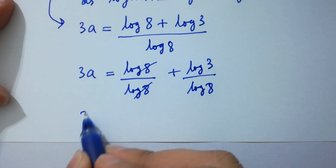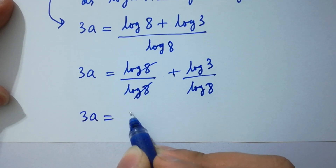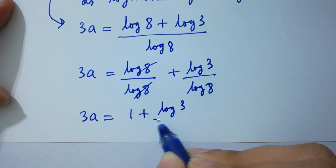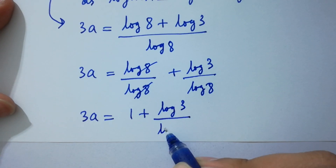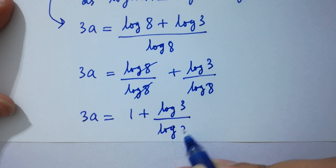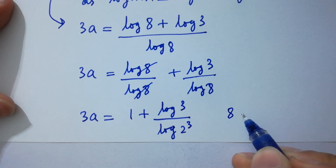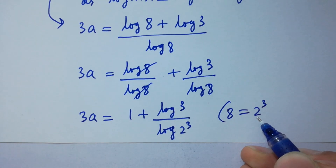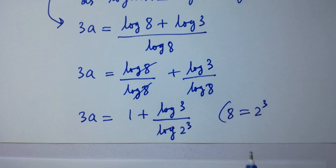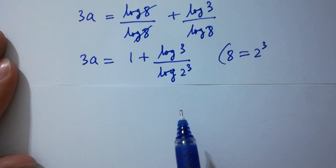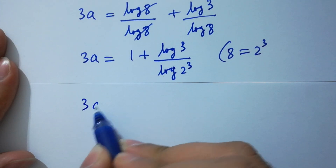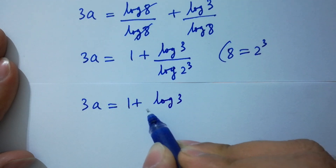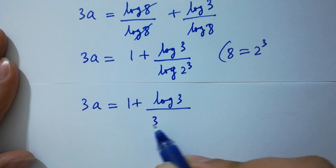So 3a equals 1 plus log 3 over log 2 cubed, since 8 equals 2 cubed. Therefore 3a equals 1 plus log 3 over 3 log 2.